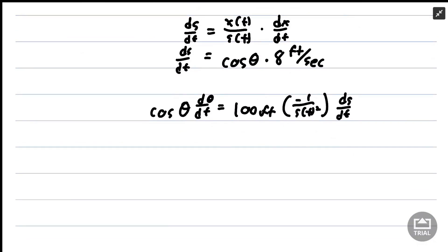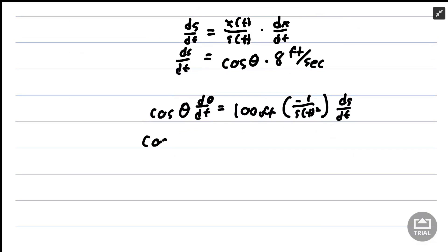If we plug in ds/dt, we'll have cosine of theta times dθ/dt equals negative 100 over s(t) squared times cosine of theta. Now we're plugging in ds/dt times 8 feet per second.